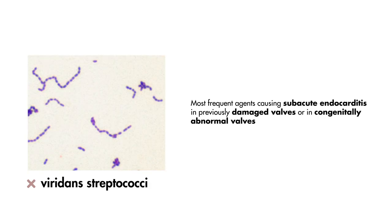Viridans strep are the most frequent agents causing subacute endocarditis in previously damaged valves, such as in rheumatic disease or in congenital abnormal valves.